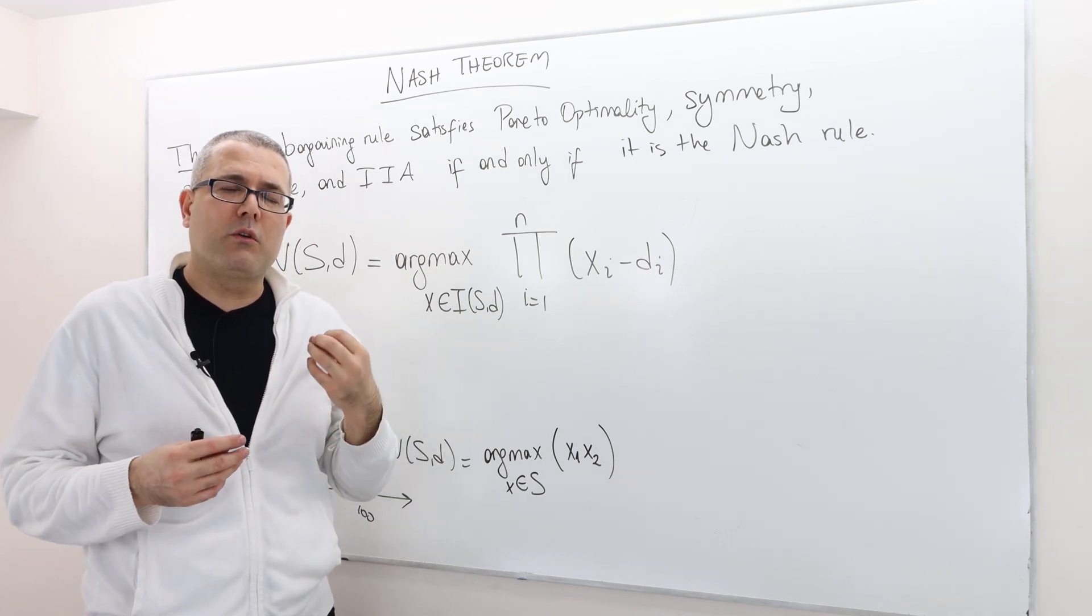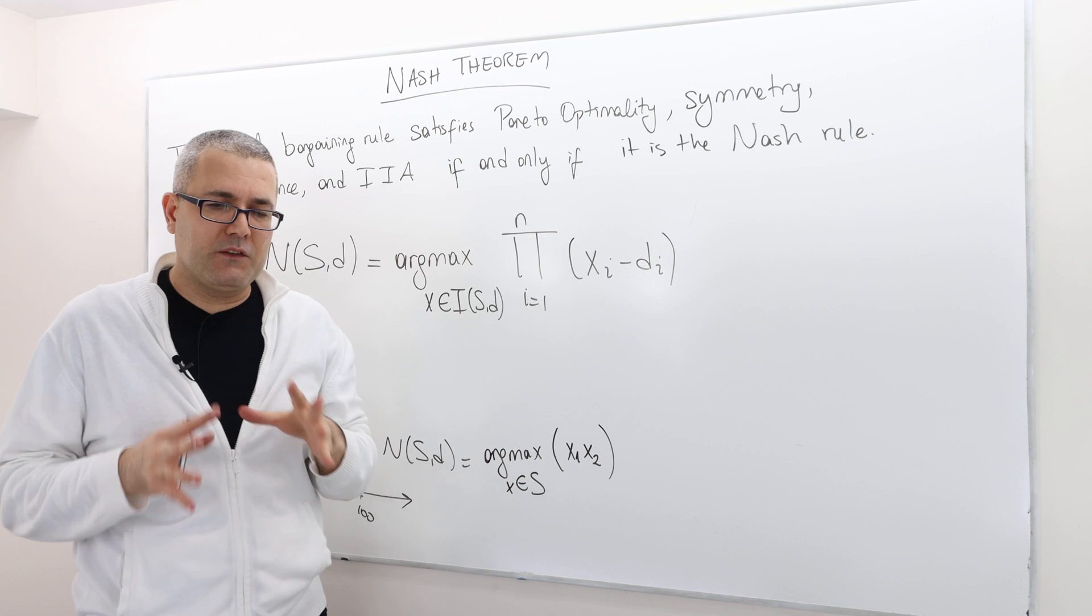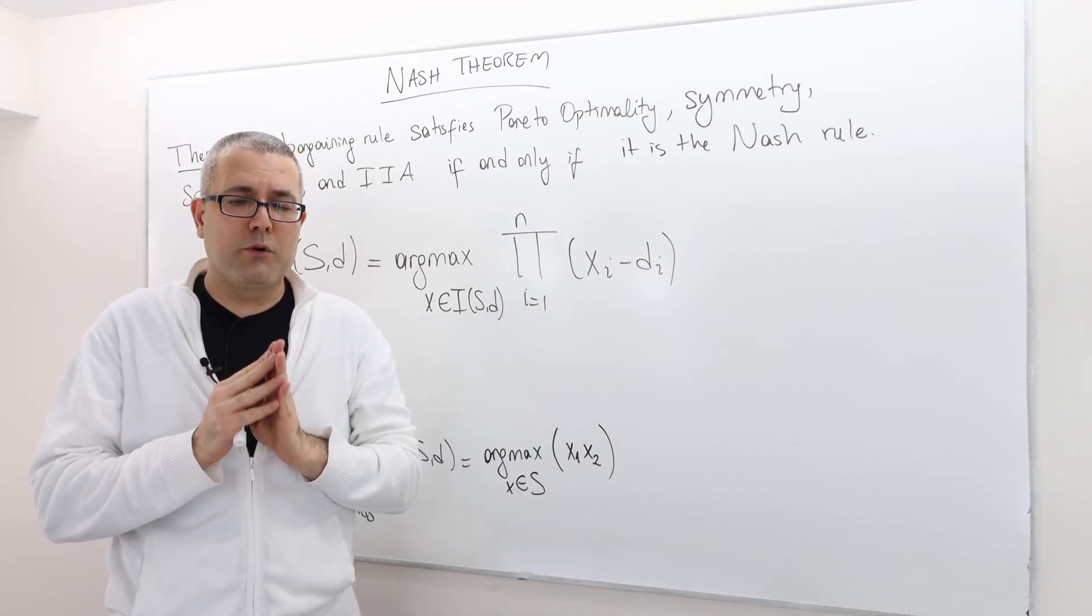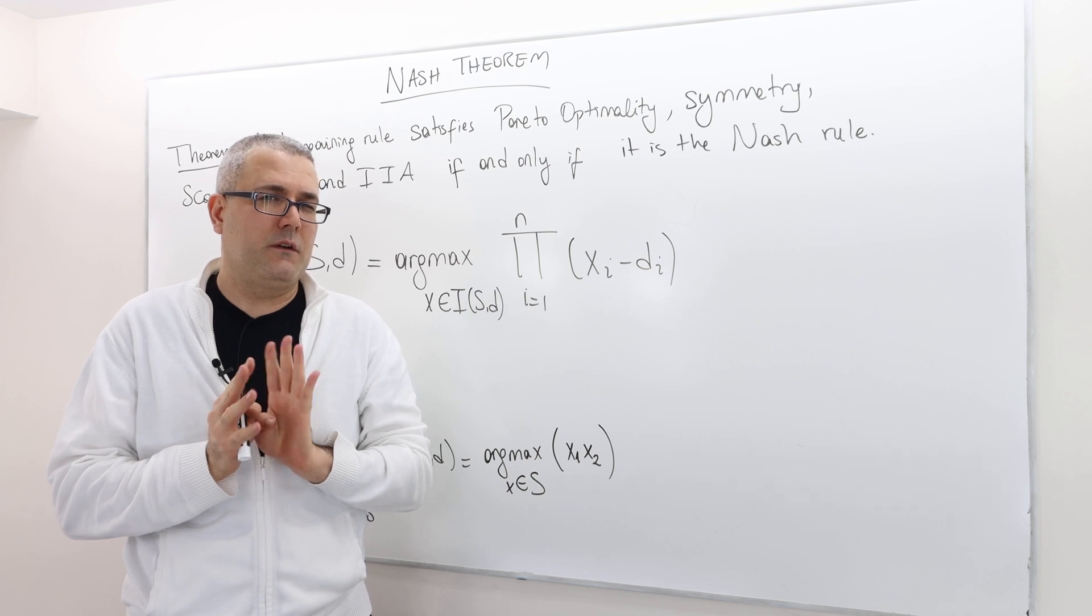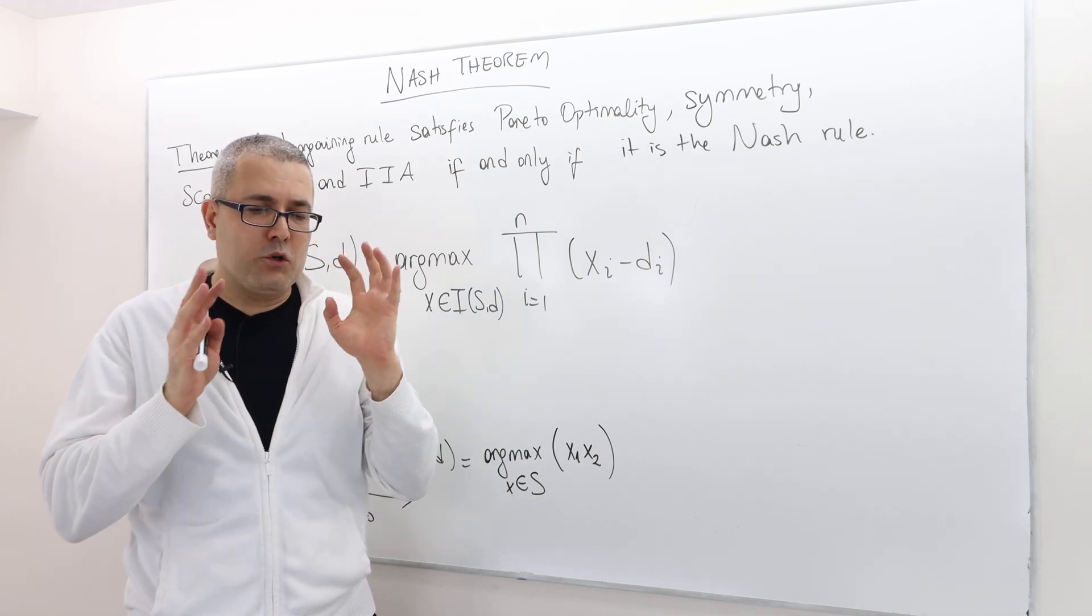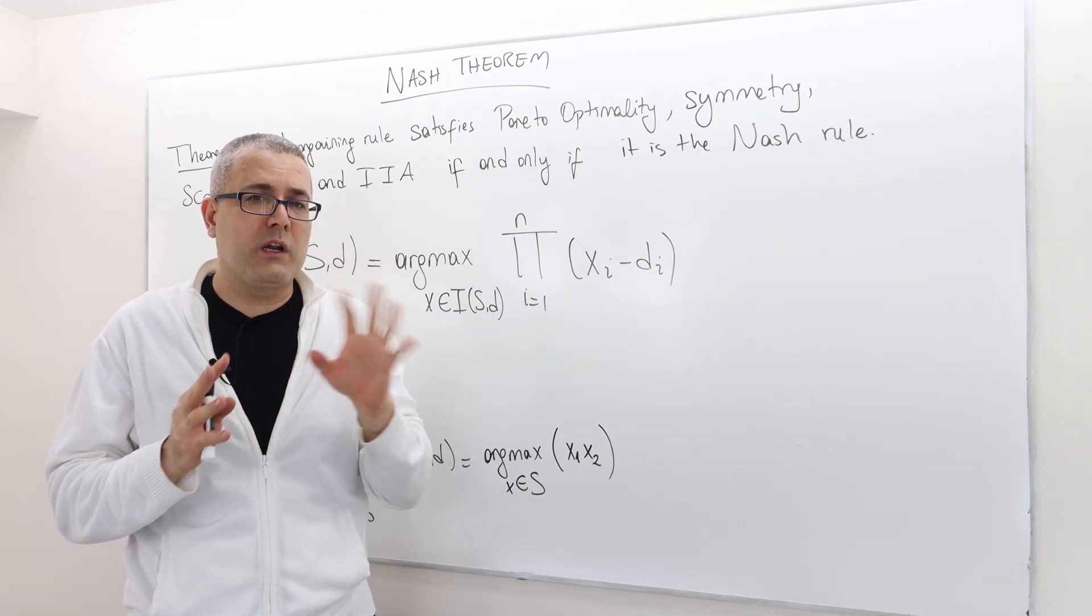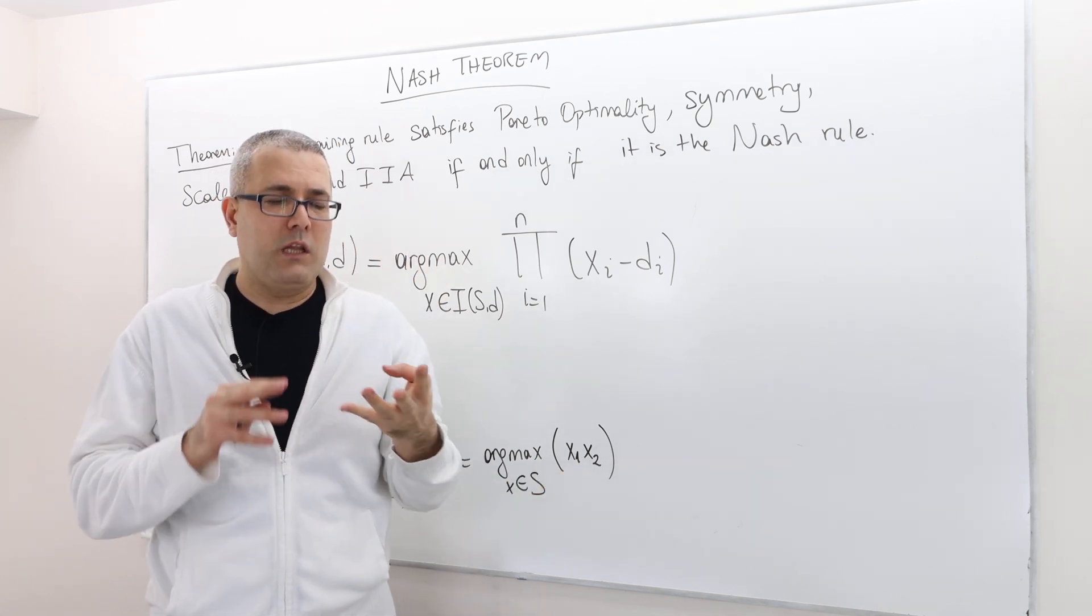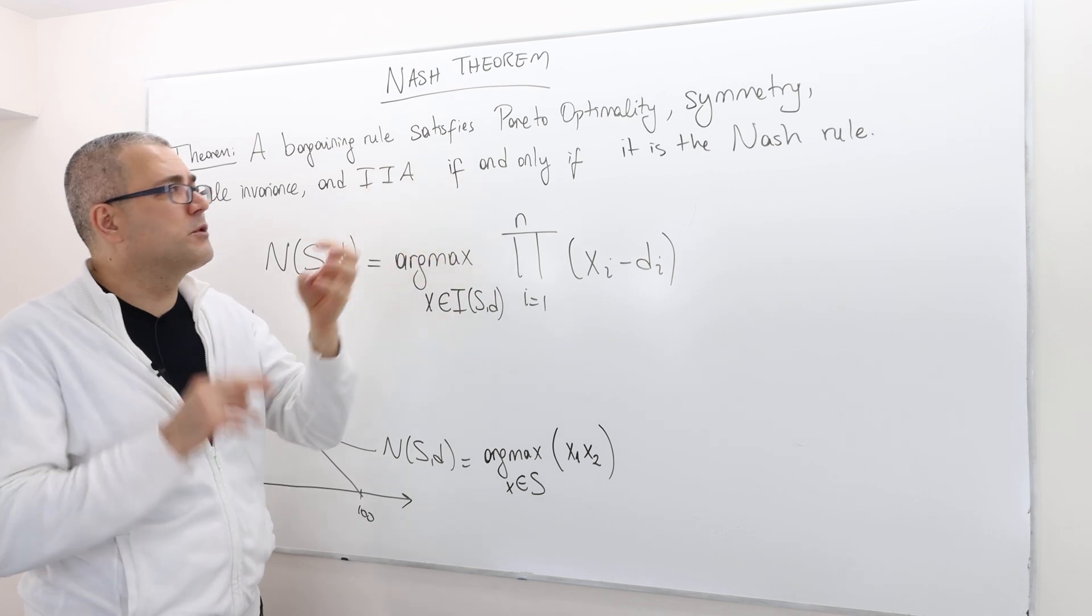So it's a very strong theorem. It basically says, if those four axioms are your measure of goodness, meaning if you're looking for rules where whatever bargaining problem they're applied on, they will always satisfy those axioms.